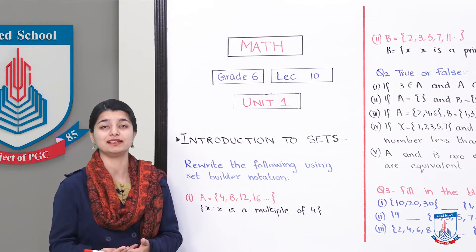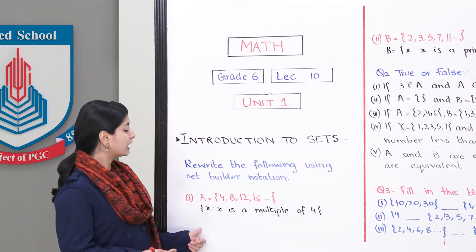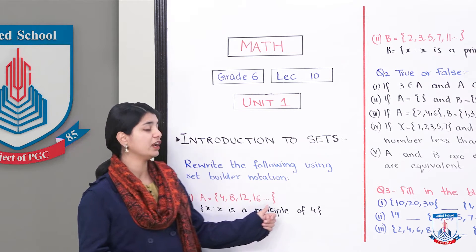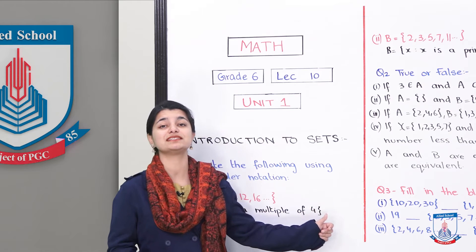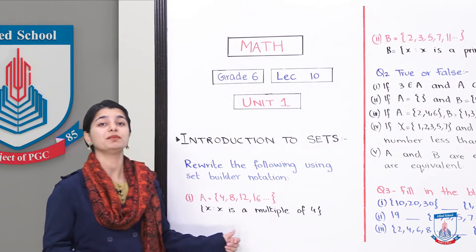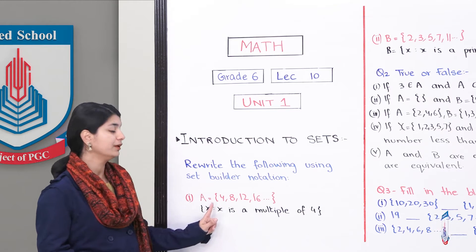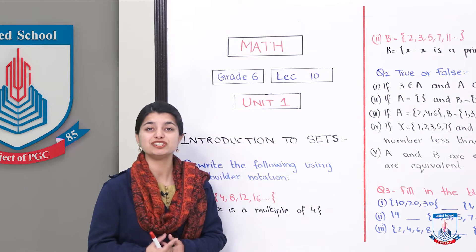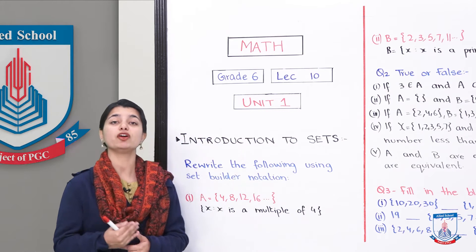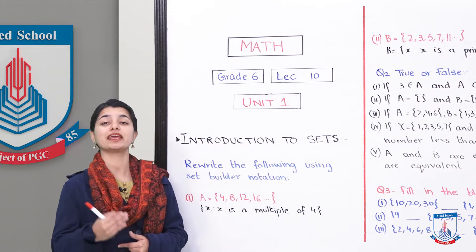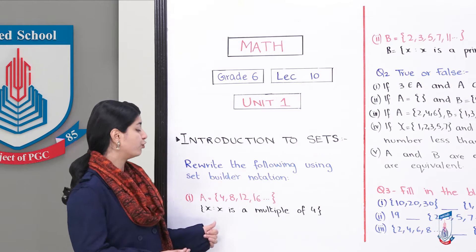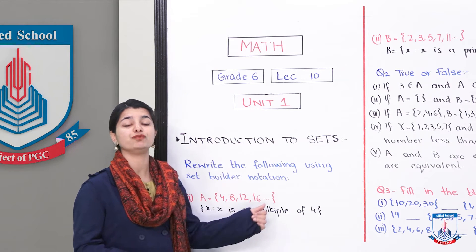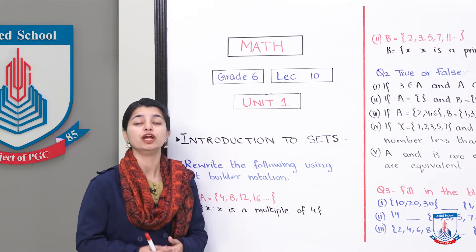Let's look at the first example. A equals 4, 8, 12, 16, and onwards. What is common in these numbers — 4, 8, 12? The common thing is that these numbers are all multiples of 4. 4 ones are 4, 4 twos are 8, 4 threes are 12, and so on. So the pattern involves the number 4.